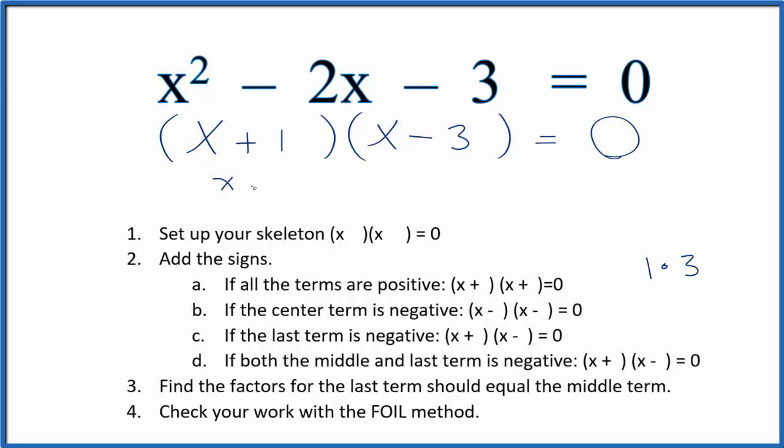We'll set x plus 1 equals 0. Add minus 1 to both sides, x equals minus 1. For here we could say x minus 3 equals 0. Add 3 to both sides, x equals a positive 3.